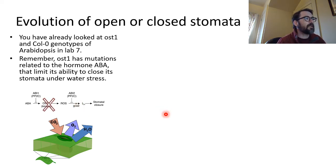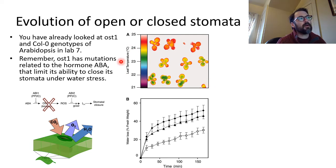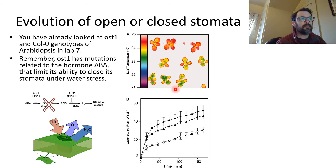They've knocked out the kinase that prevents the OST mutant from closing its stomata. Because the OST can't close its stomata, those plants show up cooler when you look at their temperature. Closing stomata means you absorb solar radiation; opening stomata means you get evapotranspirative cooling. So when we look at Columbia and two different OST mutants today...